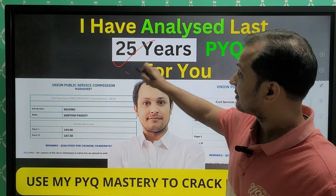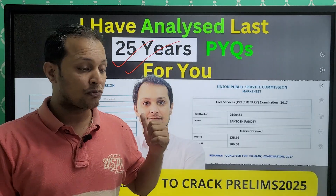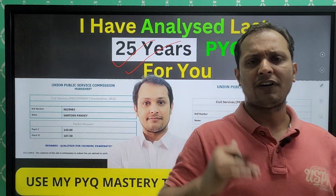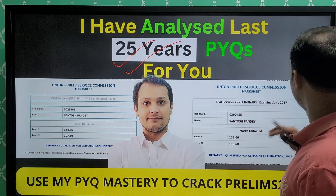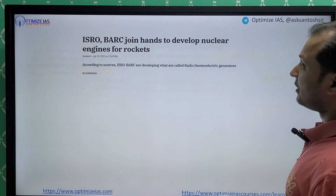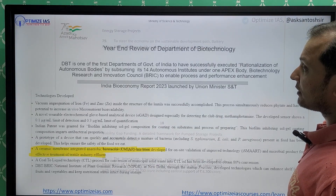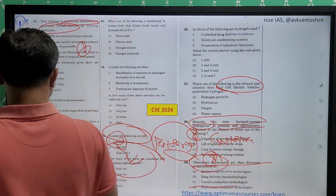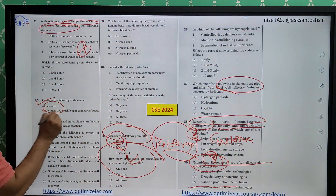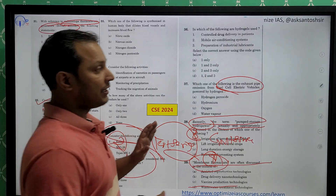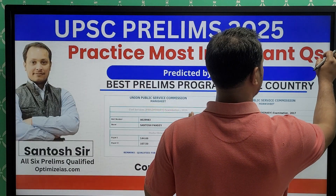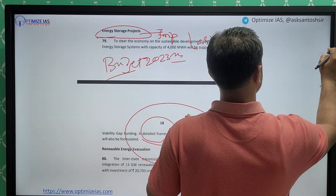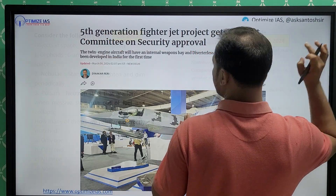If you properly solve PYQs, you will identify important sources. I have covered the last 25 years of PYQs in my PYQ Mastery classes — please go through them for quick revision. Another question came directly from PYQs: giant stars and dwarf stars — this question was taken directly from the 2023 PYQ, and UPSC essentially gave the same question the next year. The 2023 question asked to consider pairs including nebula and pulsar — showing UPSC asks the same type of questions every year.